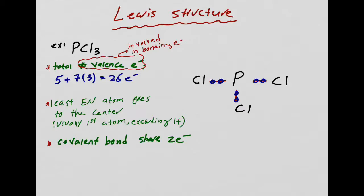So how many electrons have I already put down? One, two, three, four, five, six. Now we're going to do some math. We said we had 26 valence electrons, and I've already put down six, so 26 minus six means I have 20 electrons left.